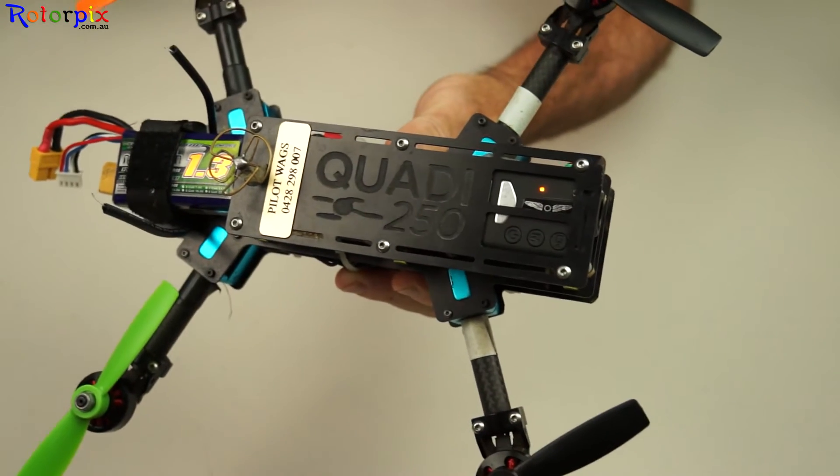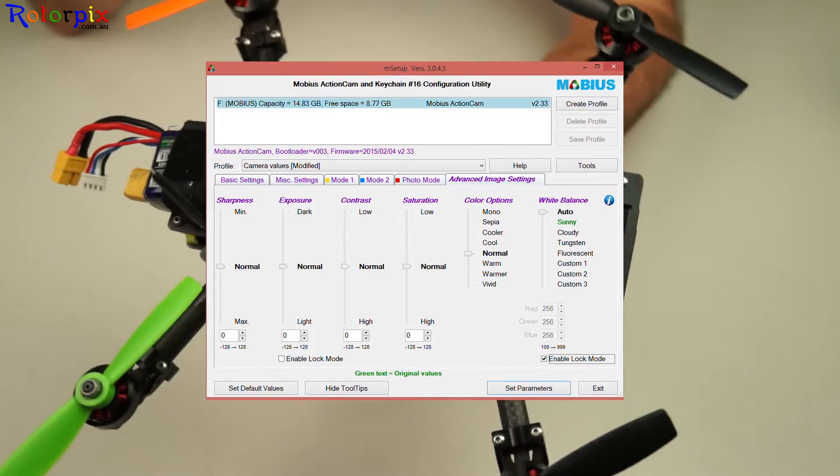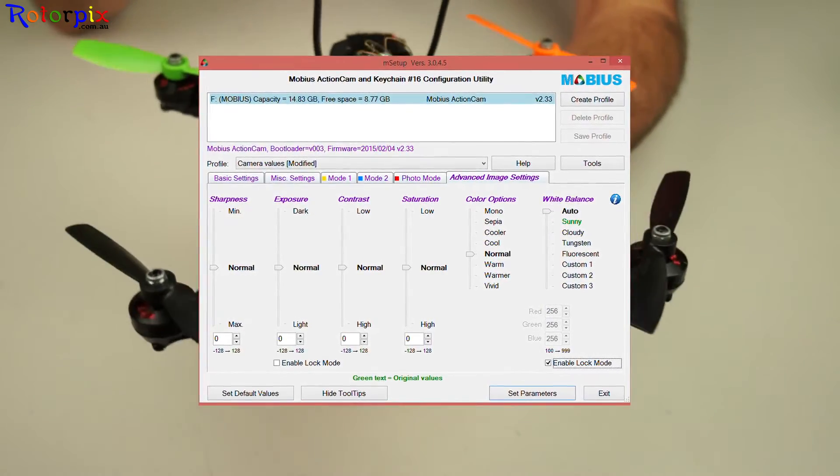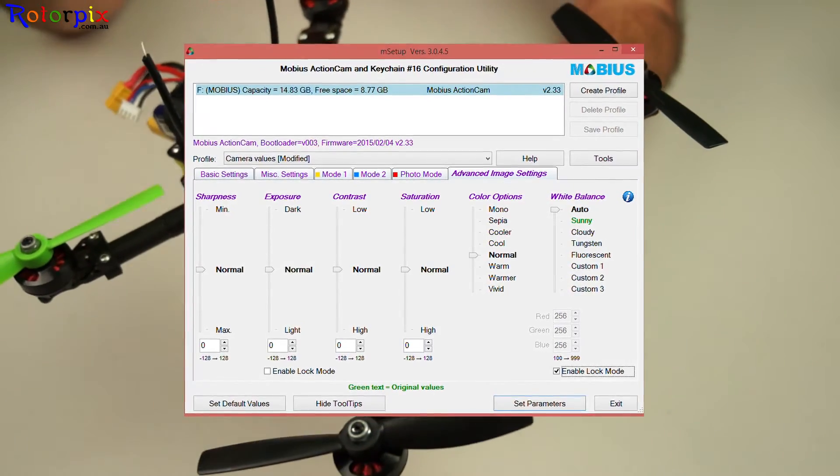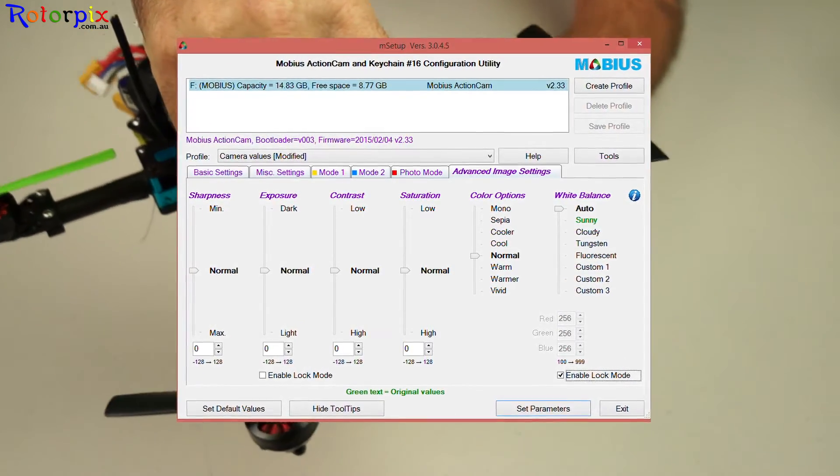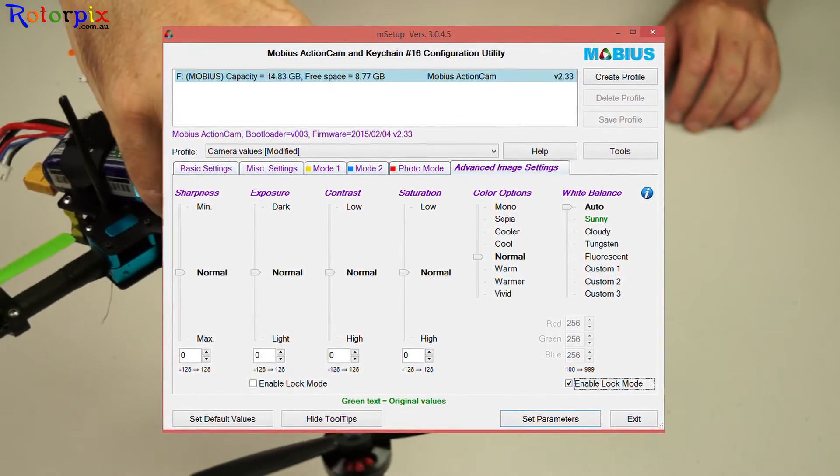It'll actually take a white balance of what it was looking at and lock it in there. So that means instead of just having it on daylight white balance or automatic white balance where it changes all the time, you can actually set your white balance. That's exactly what all the pro video guys do around the world when they're shooting.